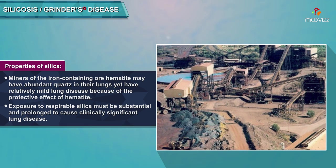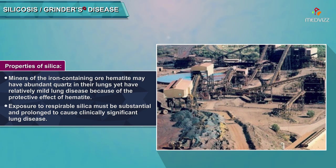For example, miners of the iron-containing ore hematite may have abundant quartz in their lungs, yet have relatively mild lung disease because of the protective effect of hematite. Exposure to respirable silica must be substantial and prolonged to cause clinically significant lung disease.